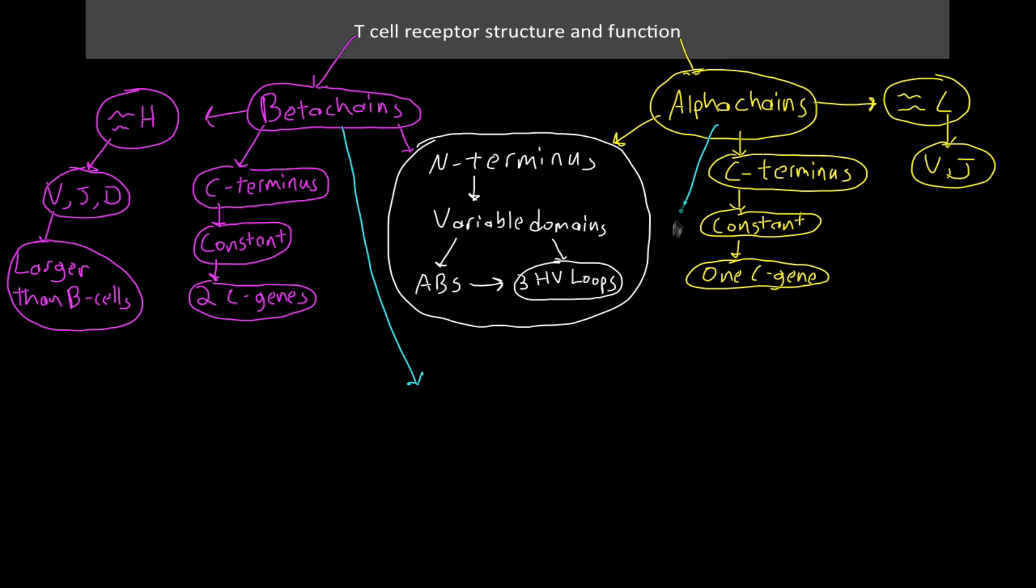Both the beta and the alpha chains come together to make up the T cell receptor. When these guys interact with the CD3 molecules, we end up getting this thing known as a TCR-CD3 complex. That's the diagram that shows all three of them huddled together.